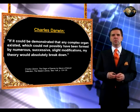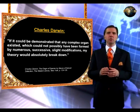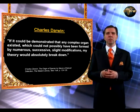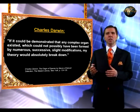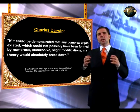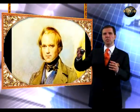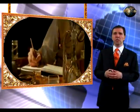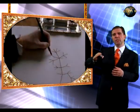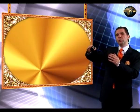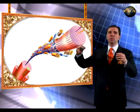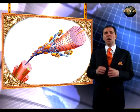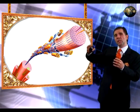In his book Origin of Species, Charles Darwin said: 'If it could be demonstrated that any complex organ existed which could not possibly have been formed by numerous successive slight modifications, my theory would absolutely break down.' He is right — this is exactly what happened. New scientific evidences have shown that complex organ systems could not have been formed gradually, step by step.